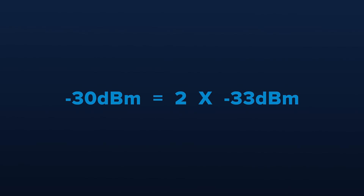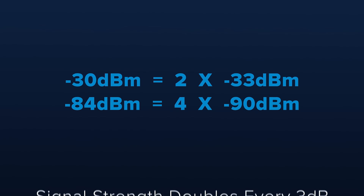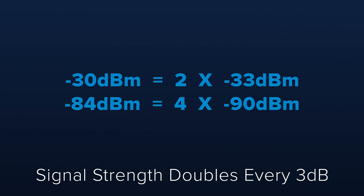Keep in mind that because DB and DBM are logarithmic, the normal ways we are used to thinking about magnitudes no longer apply. For example, a -30 DBM signal is twice as powerful as a -33 DBM signal, and a -84 DBM signal is four times as powerful as a -90 DBM signal. The signal strength doubles every 3 dB.